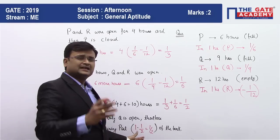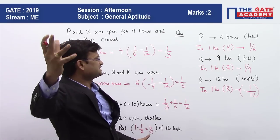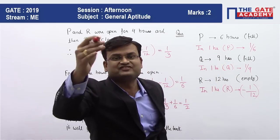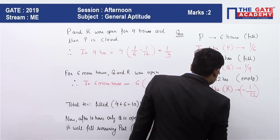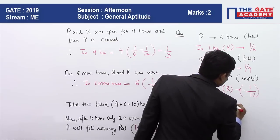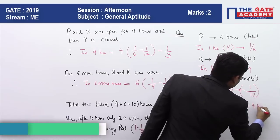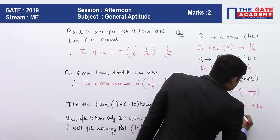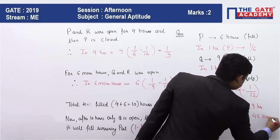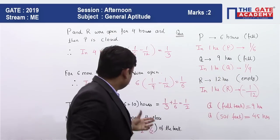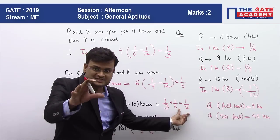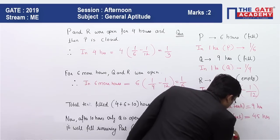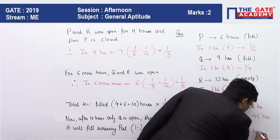Let's write that. Now after ten hours, only Q is open, therefore it will fill the remaining part which is half of the tank. Now here common sense is required. Q takes nine hours to fill the full tank, so in how many hours will it fill fifty percent of the tank? For Q, full tank is nine hours, we know that only fifty percent of the tank is pending, so it will be nine by two, which is four point five hours. So total hours are ten hours to fill fifty percent and the remaining fifty percent took four point five hours. So total hours is ten plus four point five, which is fourteen point five hours.